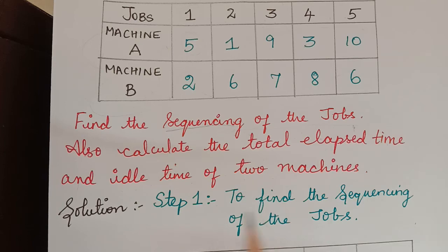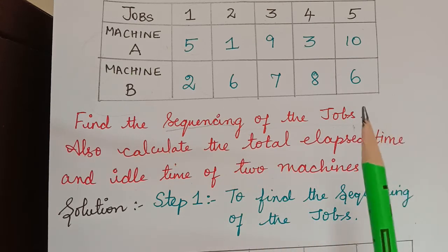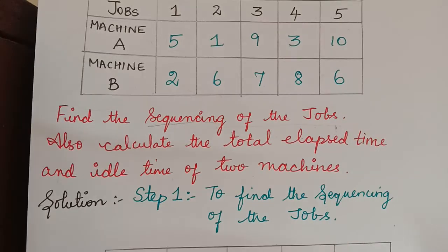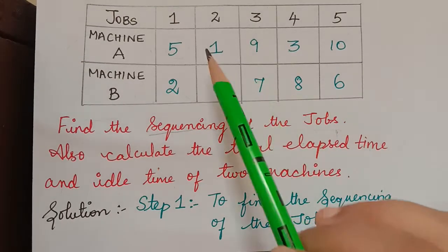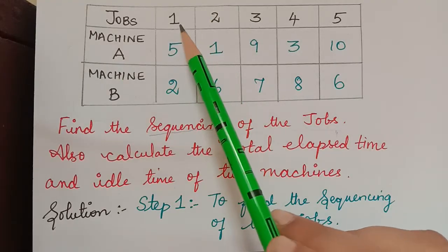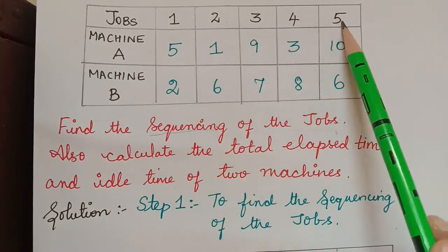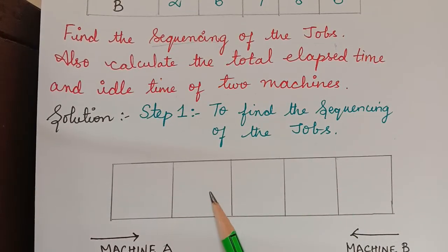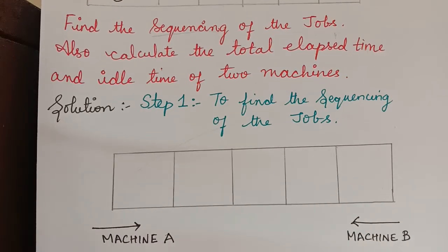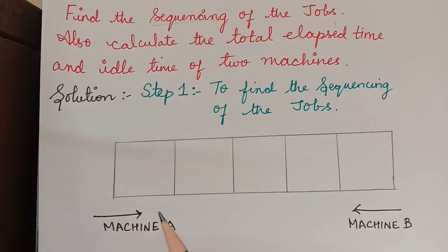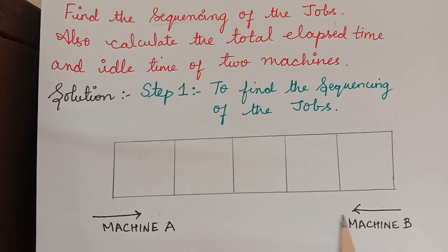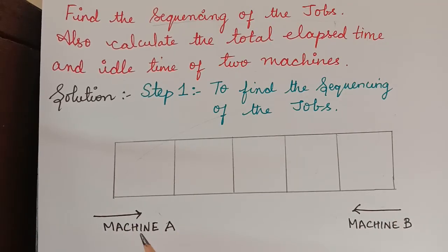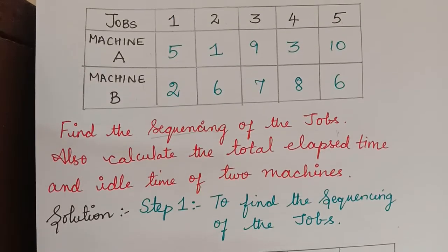The first step is to find the sequencing of the jobs — the order in which the jobs have to be performed. To find the order, first we must check how many jobs there are: 1, 2, 3, 4 and 5 — there are 5 jobs. So we draw a table with 5 boxes. After that, we write machine A from the right and machine B from the left.